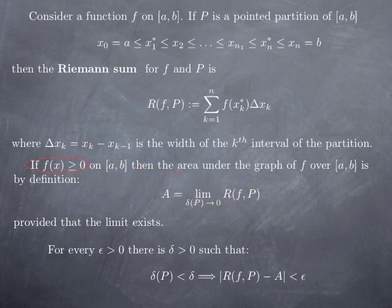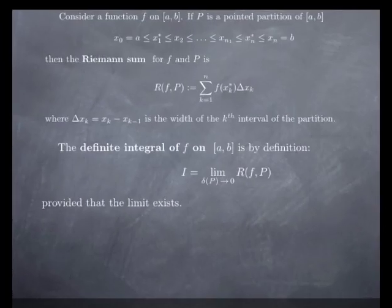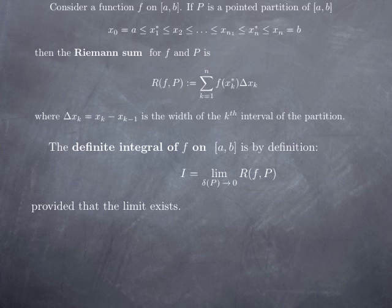We defined this for a non-negative function because we were talking about the area under the graph. But formally, this process of taking the limit of the Riemann sum does not really depend on whether the function is non-negative on the interval or not. So more generally, with the same setting, we define the definite integral of the function f on an interval [a, b] as the limit of the Riemann sums of f for pointed partitions, as the parameter of the pointed partitions goes to zero.